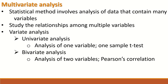Bivariate analysis is a statistical method for the analysis of two variables. Examples of statistical methods include Pearson correlation coefficient or Spearman's correlation coefficient. When there are two groups, it is the two-sample t-test — paired or unpaired — or the Mann-Whitney U test. All these tests are designed to analyze data consisting of two groups or variables, so it is called bivariate analysis.